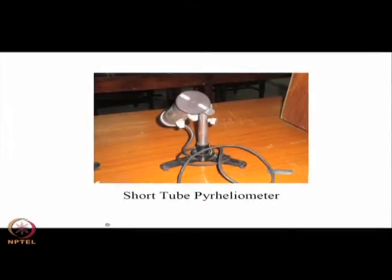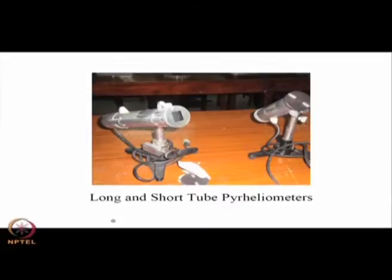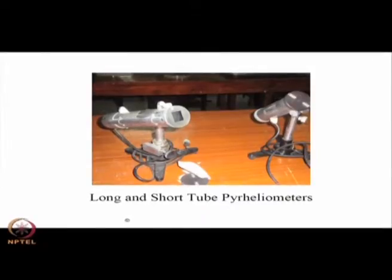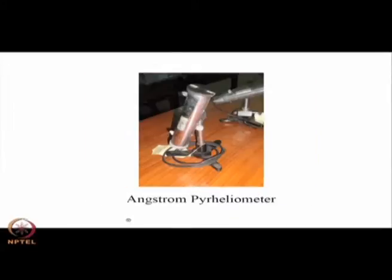This is a short-tube pyrheliometer. At the bottom of that long tube there is a sensor which gets heated by solar radiation. When the cap is removed, it is directed towards the sun and the rays falling on the sensor heat it. The difference between the long and short tube pyrheliometers is that the long one, when uncovered, has a lesser subtended angle and measures radiation emanating from the sun only, while the short tube one has a higher subtended angle and measures radiation also coming from around and surrounding the sun.